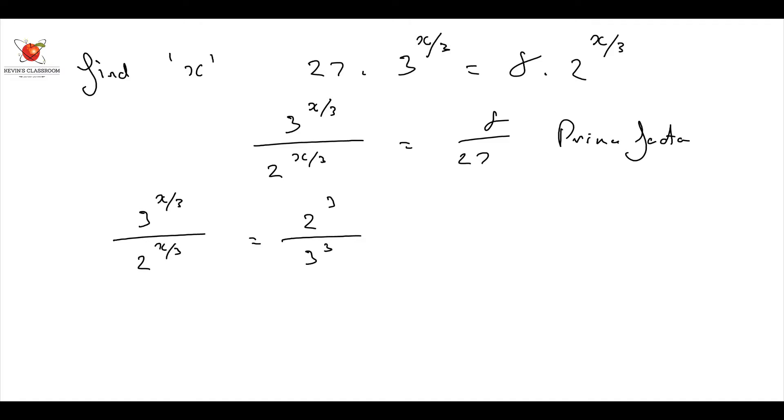Now what is my actual thing here? Now I put this in brackets. This is 3 over 2 to the power of x over 3 is equal to 2 over 3 to the power of 3.